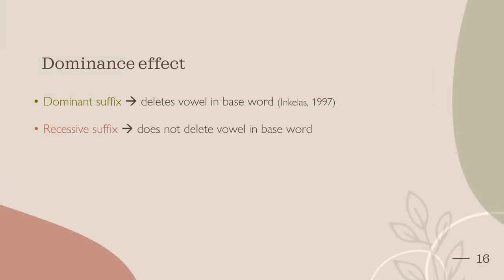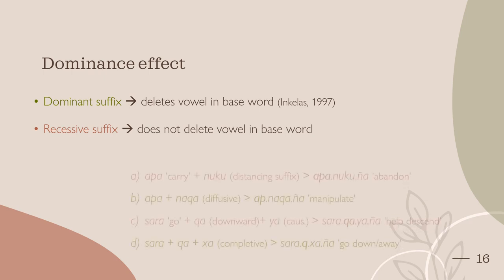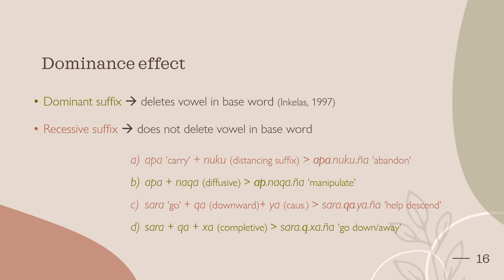There appears to be a dominance effect of lexically-driven vowel deletion, in which some suffixes delete vowels while others do not. A dominant suffix is one which deletes the final vowel of the base word, while recessive suffixes do not delete a vowel. This can be seen in the example on screen, with the green examples displaying dominant suffixes, while the red examples show recessive suffix behaviour. I will note that the previous slide only showed the examples in green.